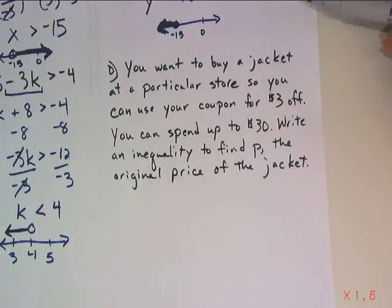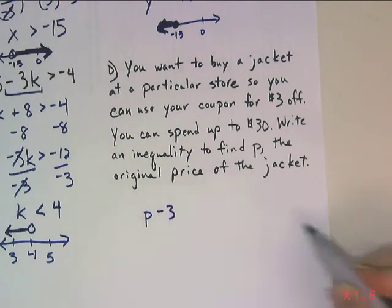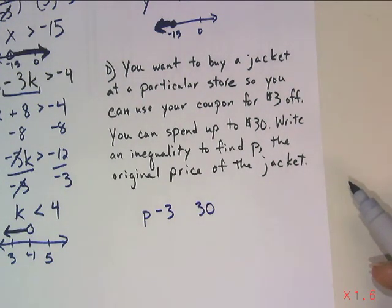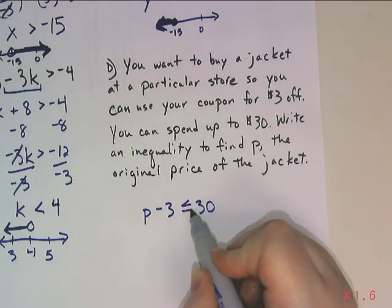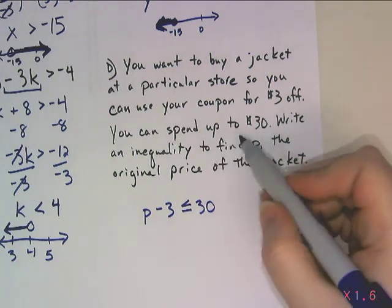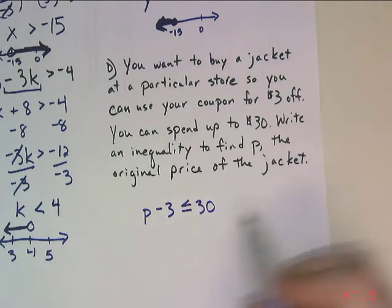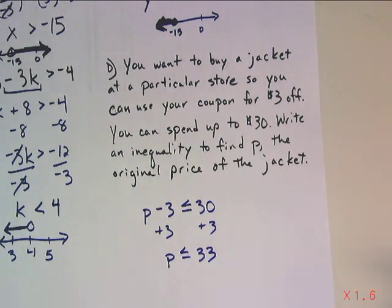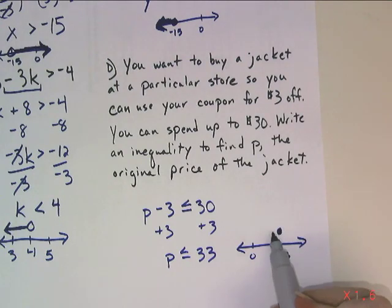For the word problem, p is the original price of the jacket. After applying the $3 off coupon, the sale price must be less than or equal to $30 — it could equal $30 if I spend exactly that. So p - 3 ≤ 30. Adding 3 to both sides gives p ≤ $33. Graphed with a closed dot on $33 and an arrow to the left.